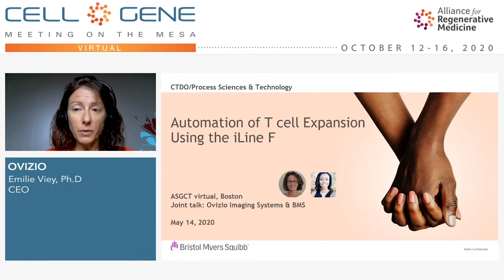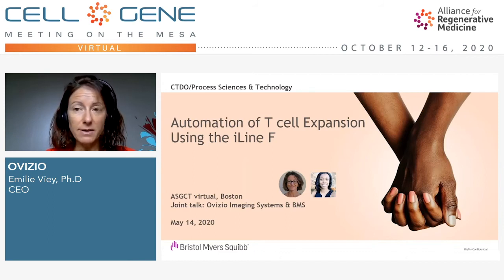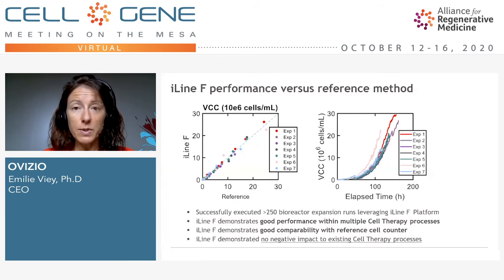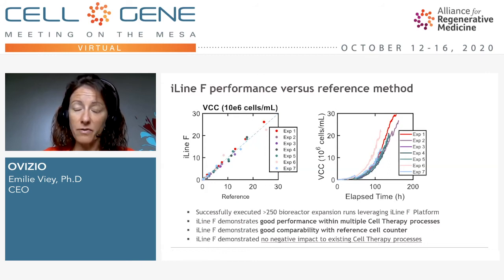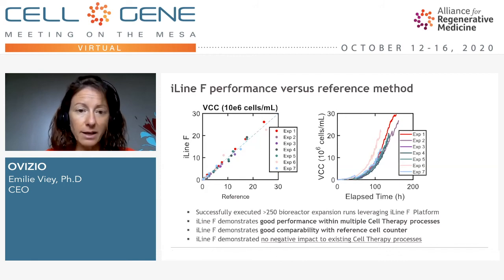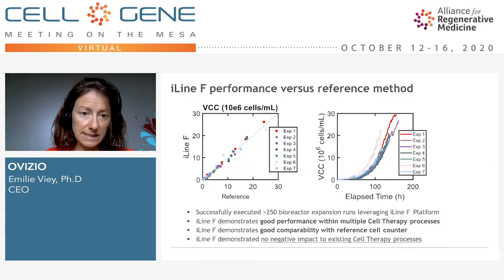Another example is the work we are currently doing with BMS. We signed an agreement two years ago with Bristol-Myers Squibb to integrate our AlignF microscope into their CAR-T workflow. They first compared the AlignF microscope to the reference method they had previously in the lab. The dot plot on the left side shows several runs comparing AlignF versus their reference online cell counter — you can see we are strongly matching with the references. The other key point was confirming that the AlignF microscope was not interfering with the expansion run and was not inducing any negative impact on the cell therapy process. Good performance and good comparability with the reference cell counter.